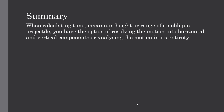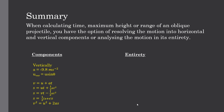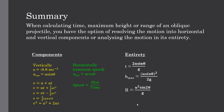In summary: when calculating the time, maximum height, or range of an oblique projectile, we can either resolve motion into horizontal and vertical components, or analyse the motion in its entirety. Using components: vertically there is always an acceleration of 9.8m per second squared downward, with initial vertical velocity u sinθ, and we use the five equations of constant acceleration. Horizontally there is no net force, constant speed, initial horizontal velocity u cosθ, and we use speed = distance / time. Alternatively, the three combined equations can be used directly. I hope this video has helped you with the basics of oblique projectile motion.